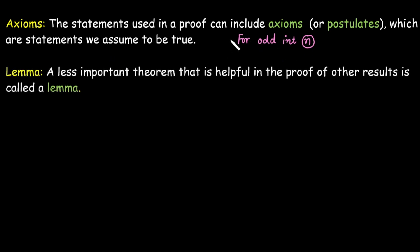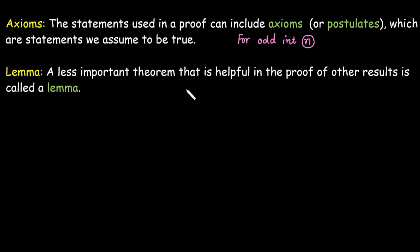There is one more word called a lemma. A lemma is basically a less important theorem that is helpful in the proof of other results. When we recall a theorem within a particular proof, that theorem is called a lemma.